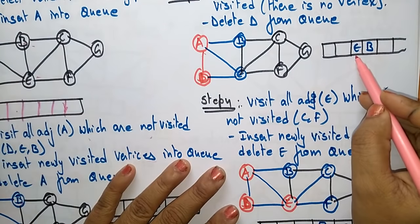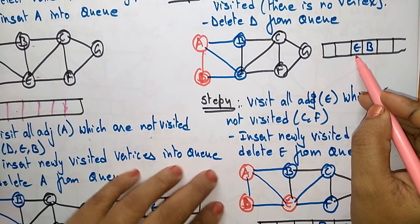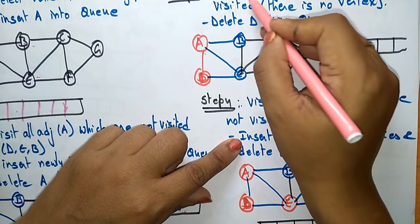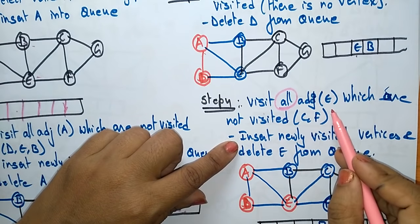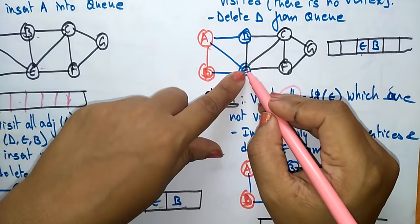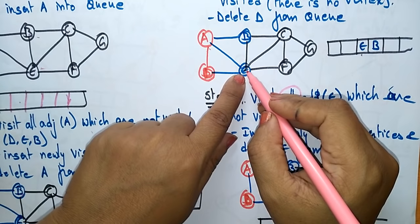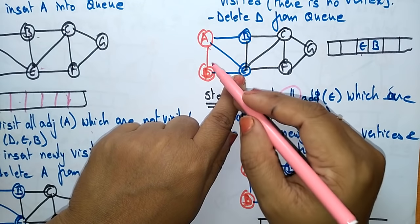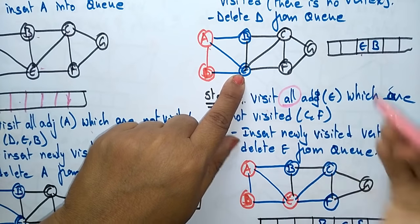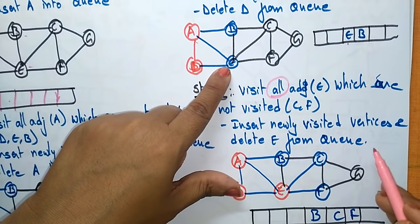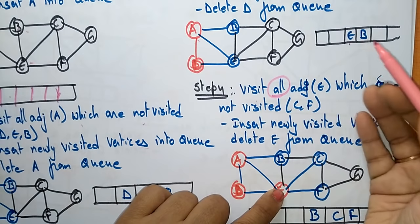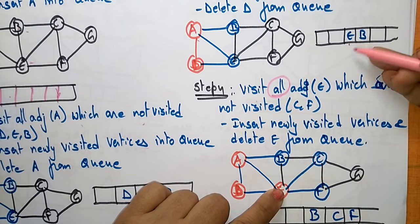Now check E. Visit all adjacent edges of E which are not visited. From E: B is visited, D is visited, A is visited. C and F are not visited, so insert C and F into the queue and delete E. Whenever you insert new vertices into the queue, you delete the current vertex being checked.